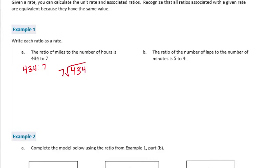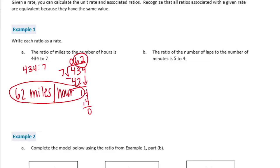So 7 goes into 4 zero times. It goes into 43 six times. 6 times 7 is 42. Subtracting it 1, bring down the 4. 7 goes into 14 two times. No remainder, nothing to bring down. So the miles to number of hours is 62 miles per hour. That is the rate.